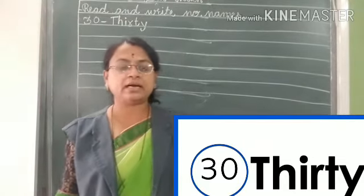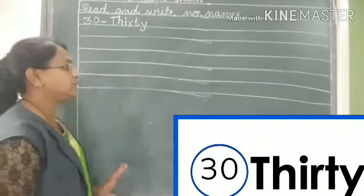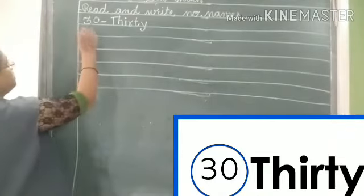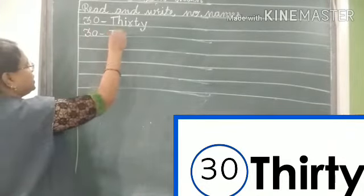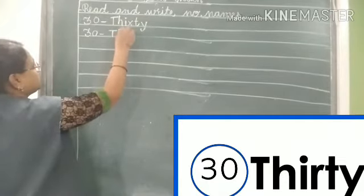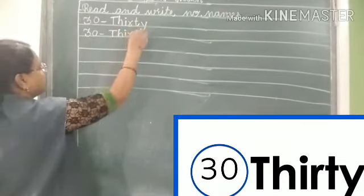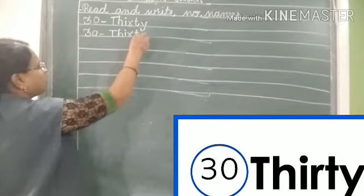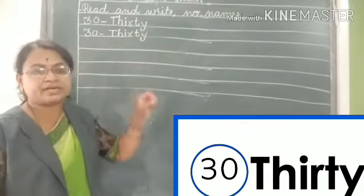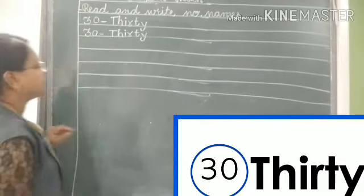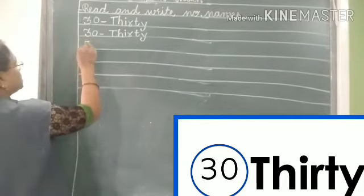You can easily memorize it. So write in this row 30 T-H-I-R-T-Y, 30.